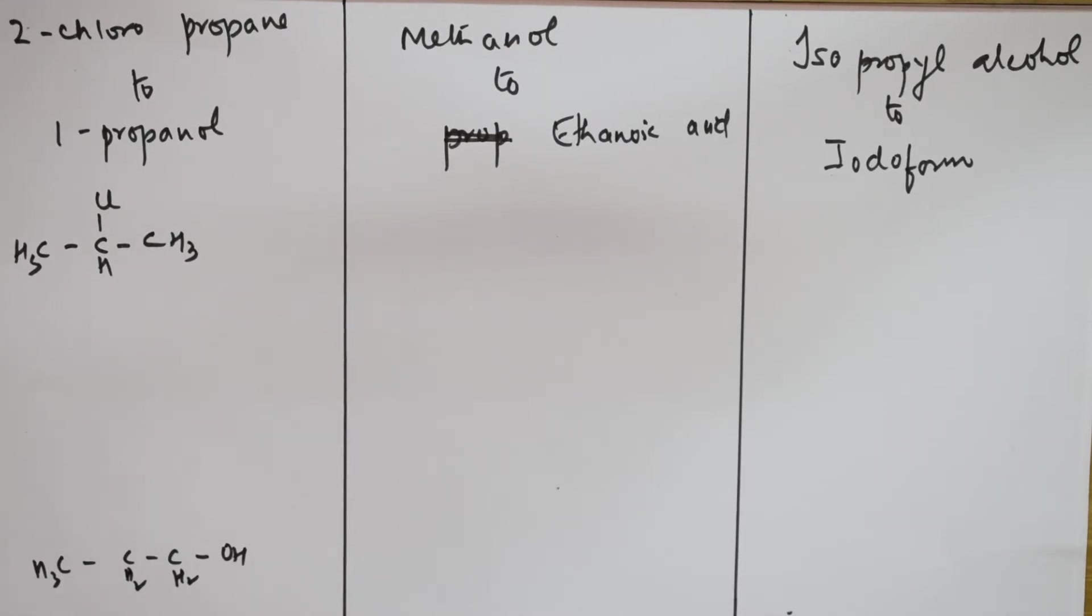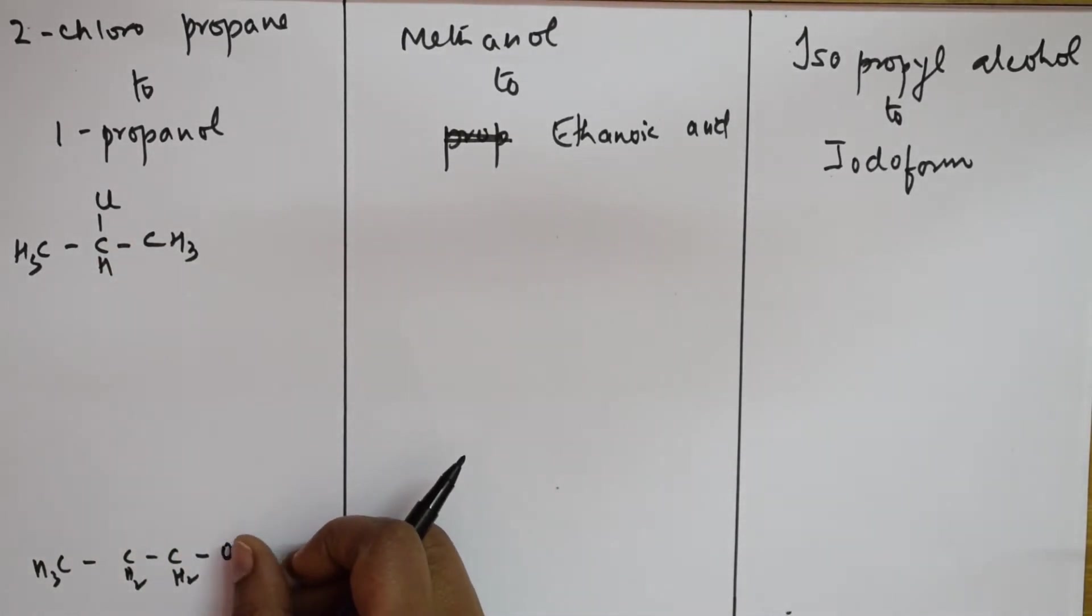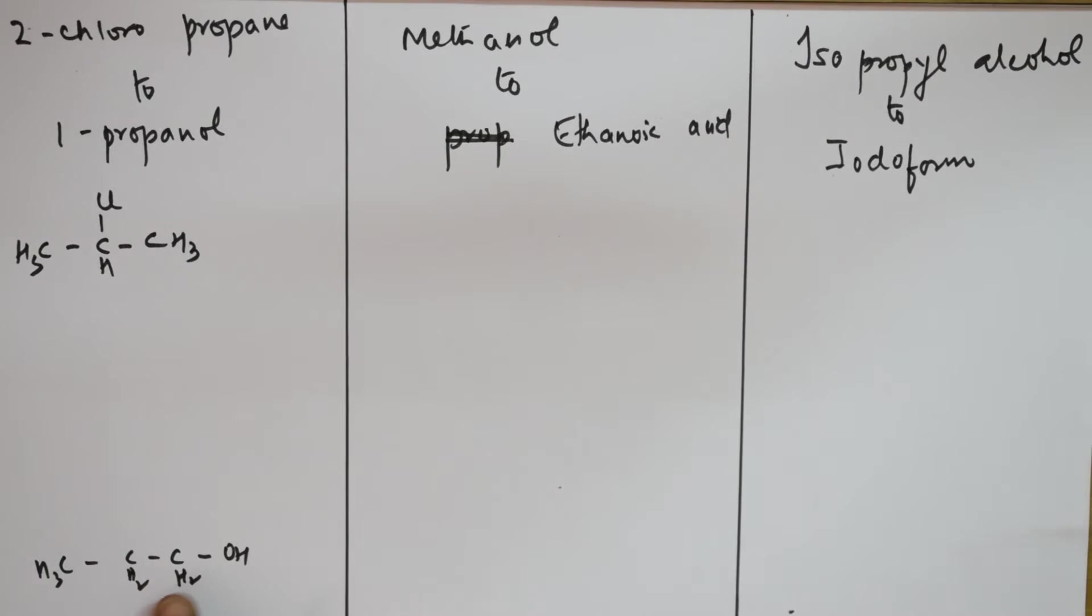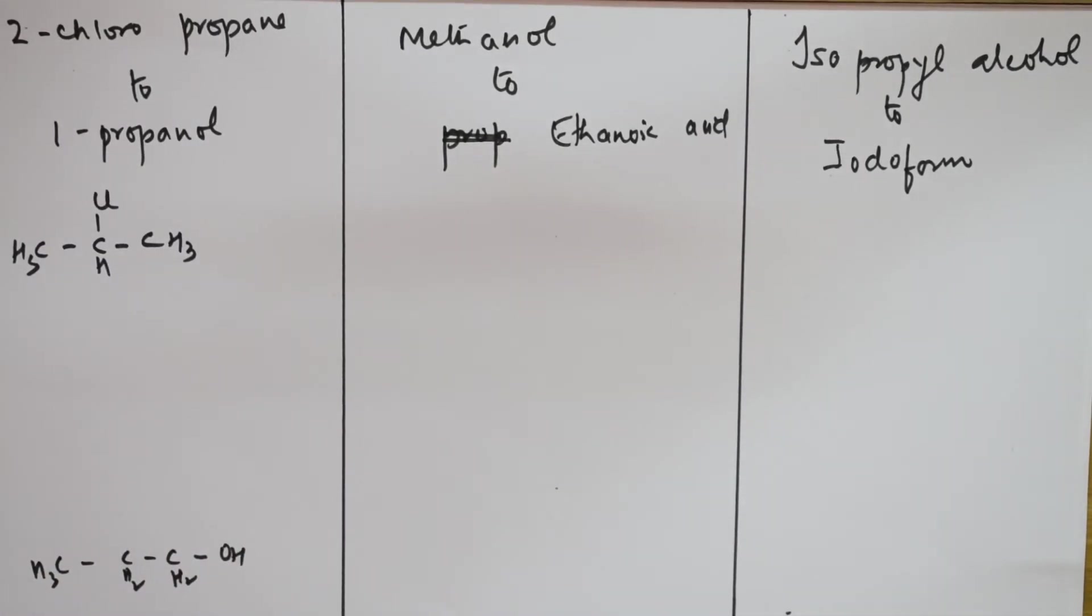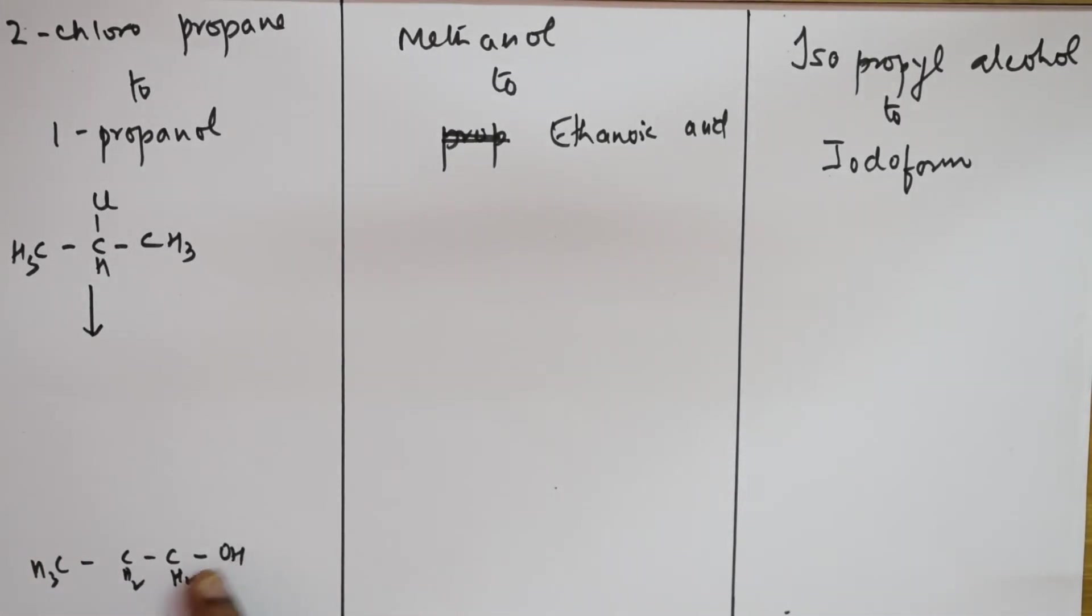Now observe carefully the difference. Here also you have three carbon atoms, here also three carbon atoms. But here you have chlorine present in the second carbon, here you have hydroxyl group present in the first carbon. I need to just see that. The first important thing is when you're trying to shift, you have to add this - you can add this only when you get an alkene.